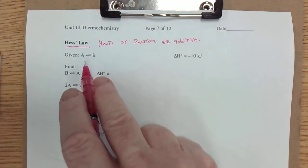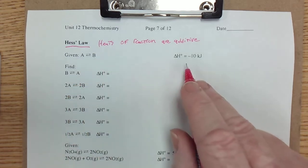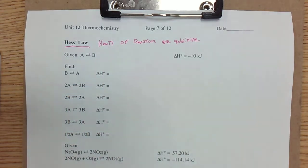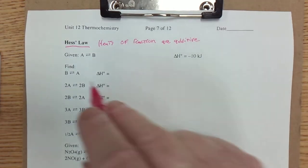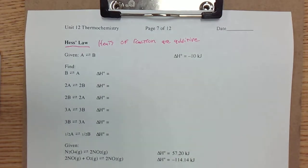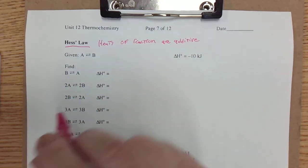Imagine we have this reversible reaction. A forms an equilibrium with B, and it has an enthalpy change of negative 10 kilojoules. That means 10 kilojoules of heat is released when A turns into B. So what happens when B turns into A, the reverse reaction?